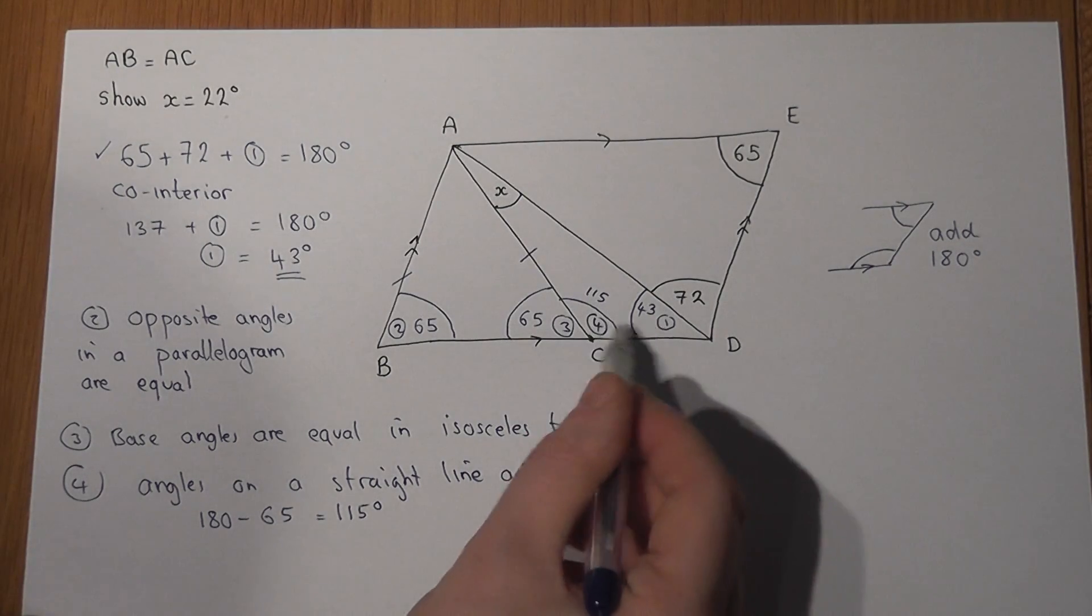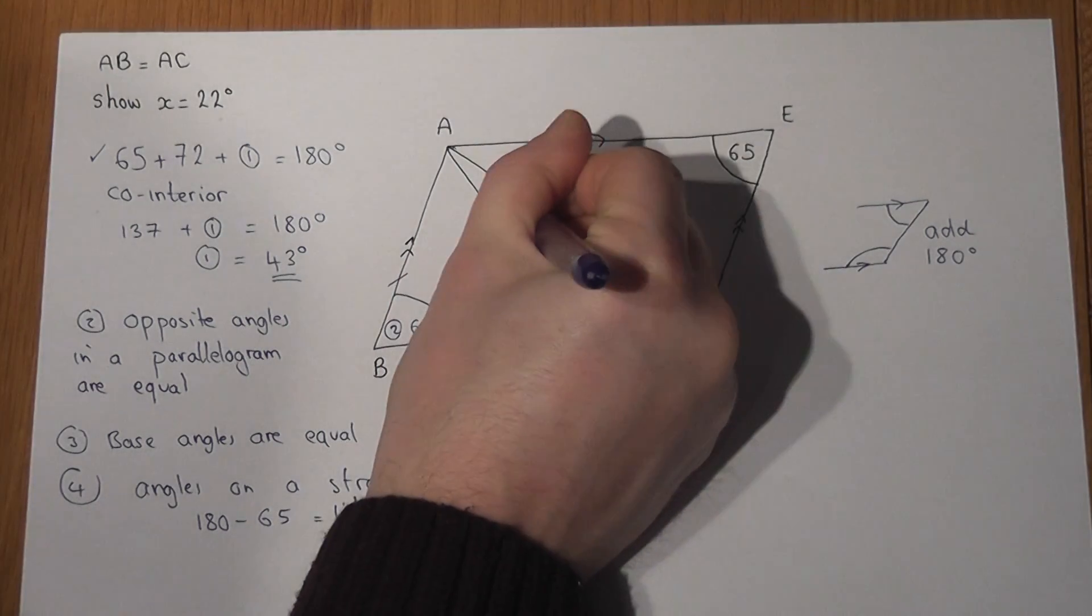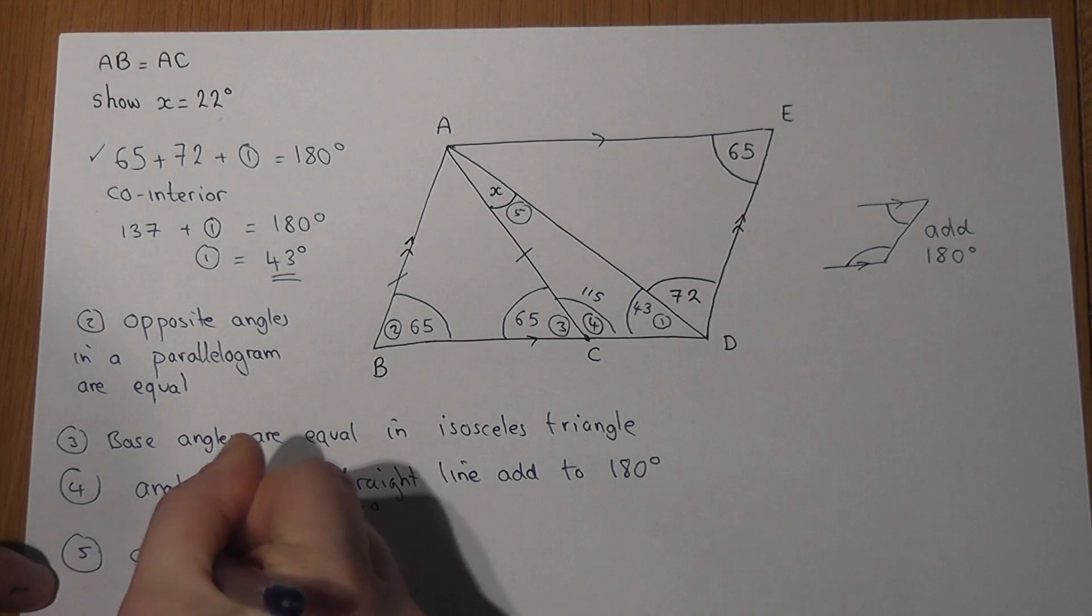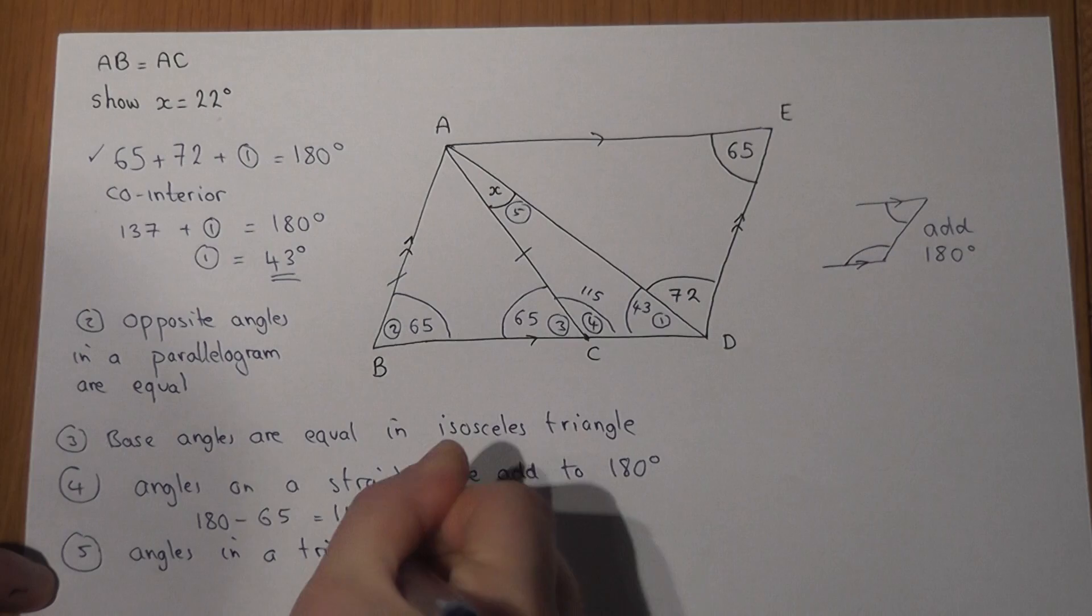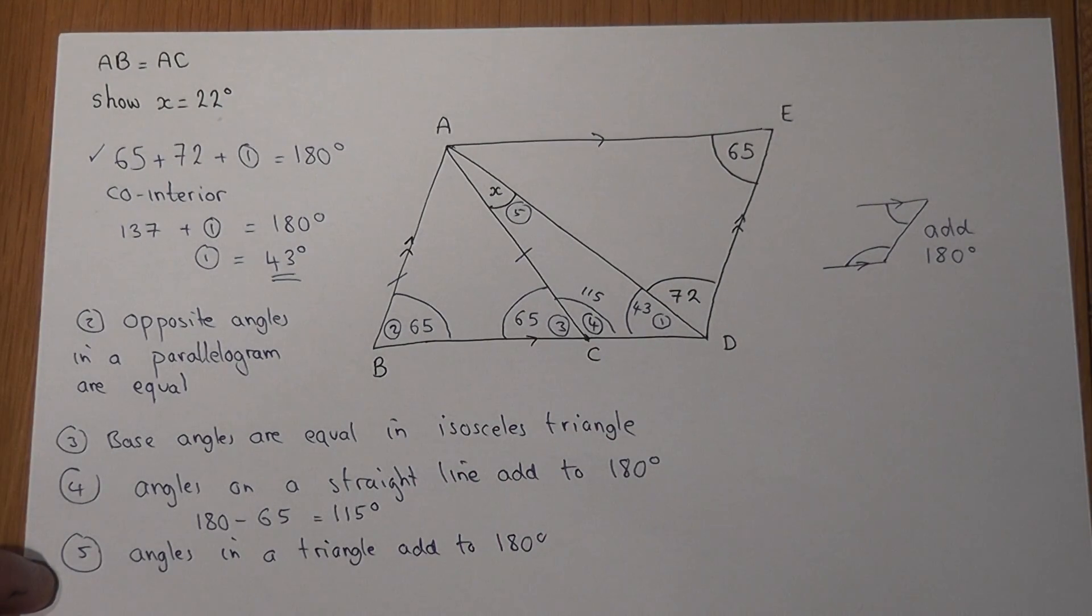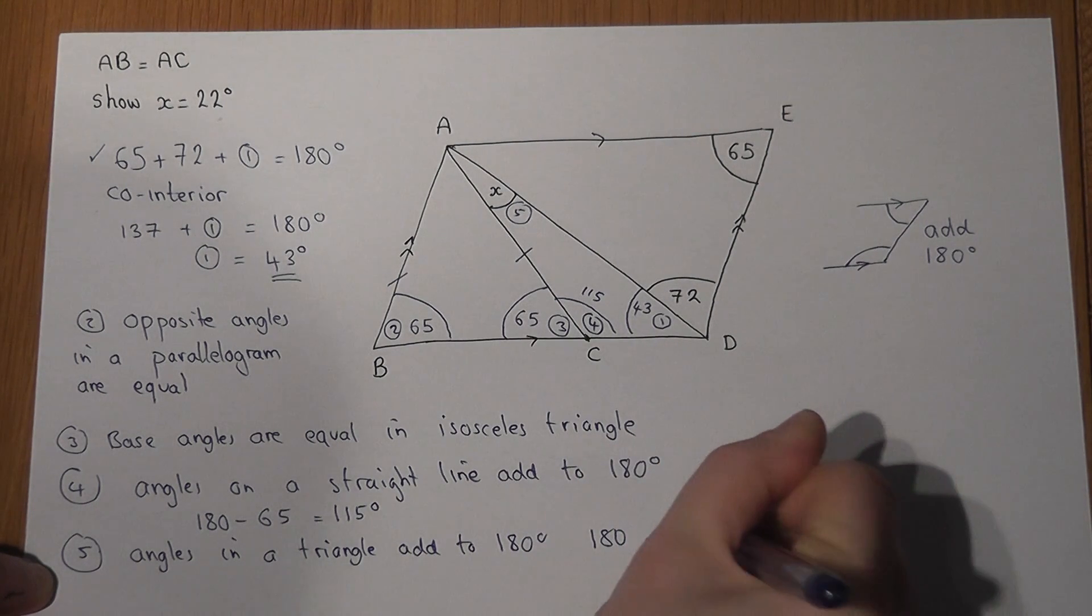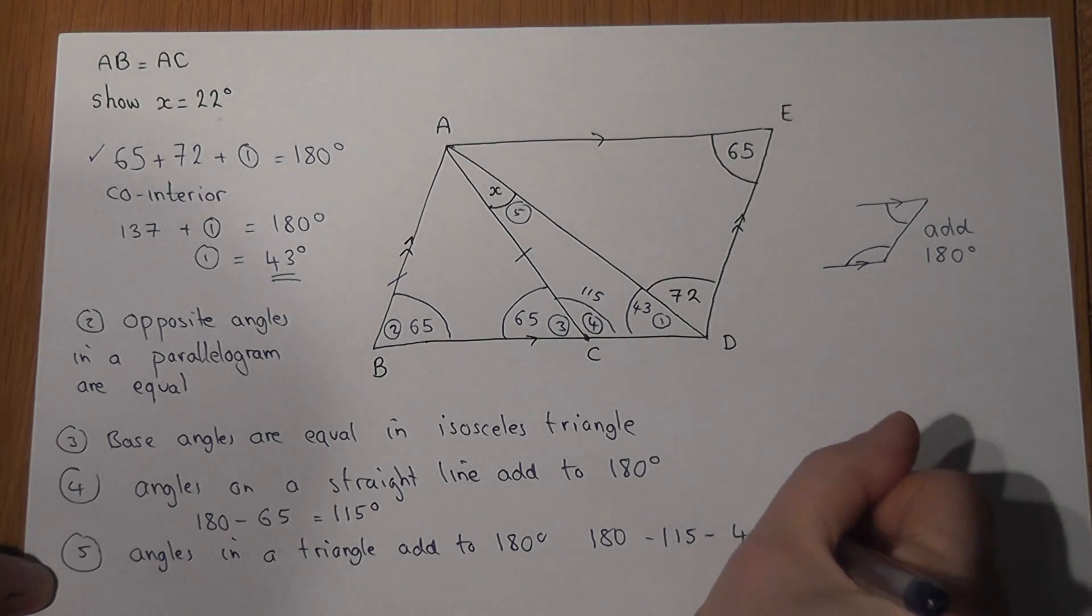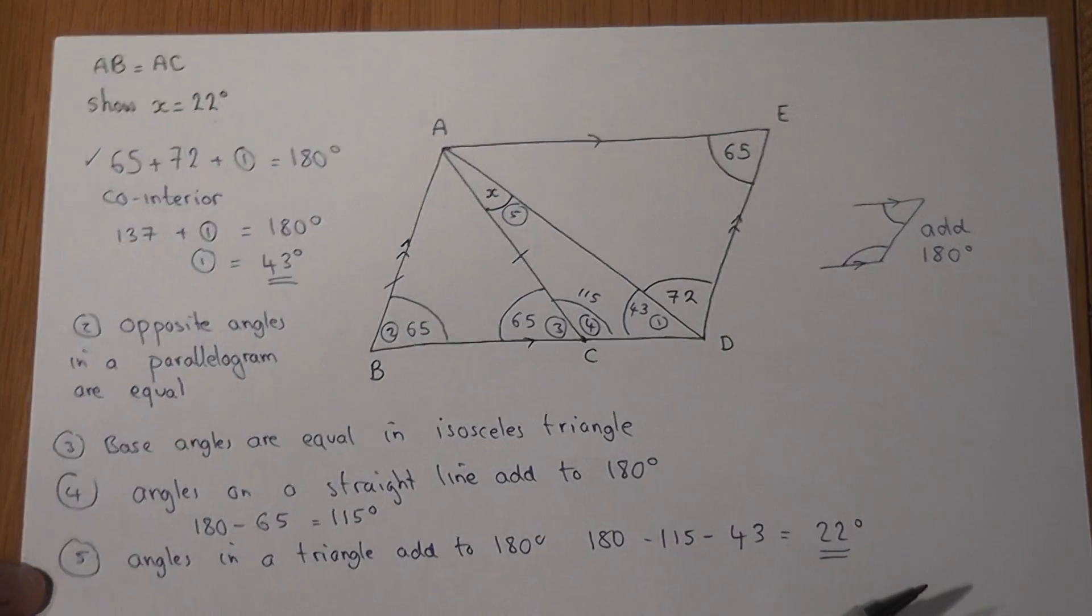Now we are almost there because we know two of the angles and the question is what is x. Well, for my final step, if I put a five here, I can write down angles in a triangle add to 180 degrees. If I then do 180 minus 115 take away 43, that leaves me with 22 degrees, which is as required in the question.